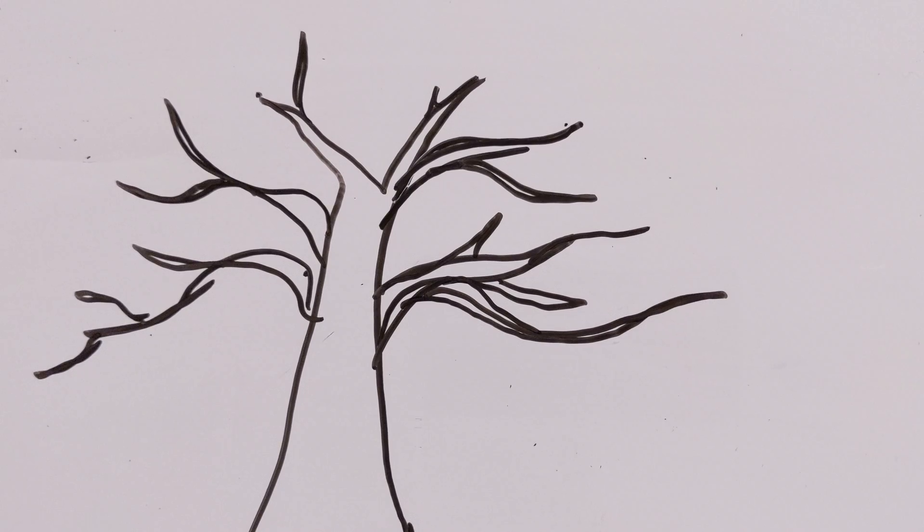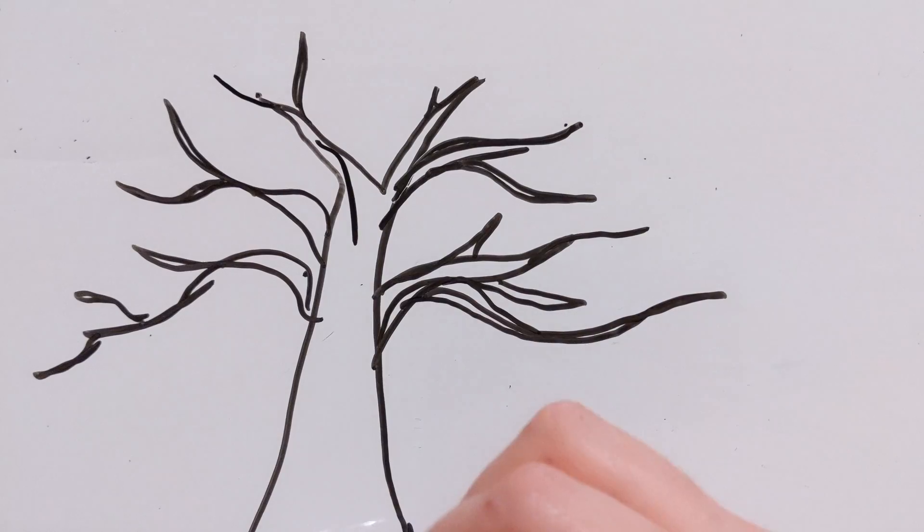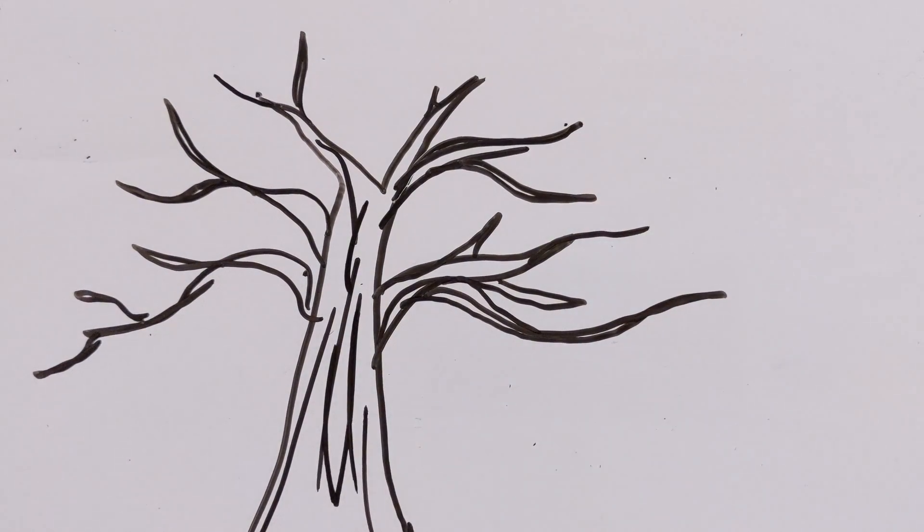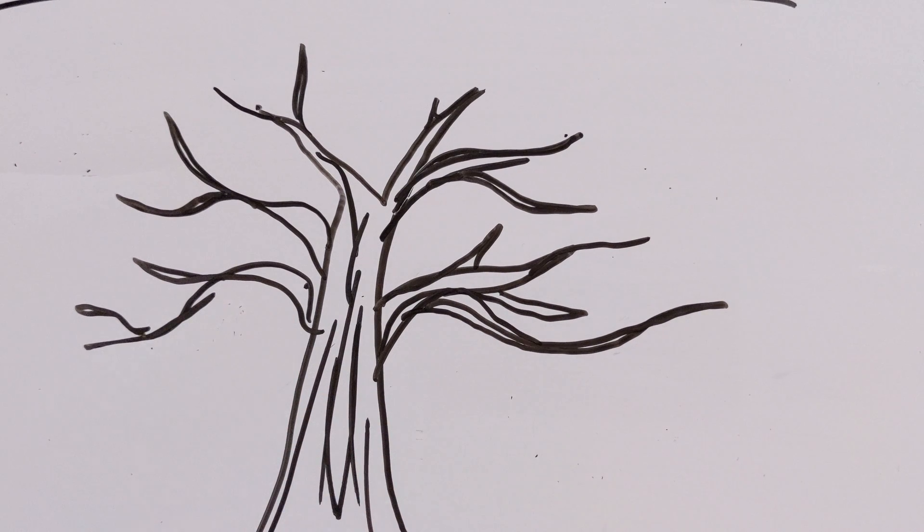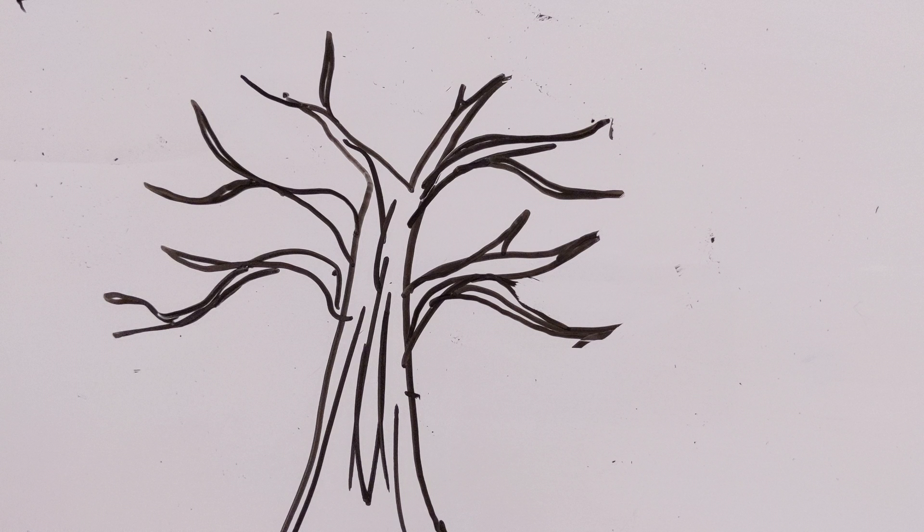All right, so once you're happy with your tree, another thing I like to do is add in texture. So lines to show the bark. I'm actually going to erase that. Yeah, maybe that's a little too much.